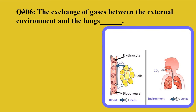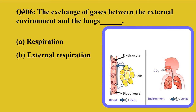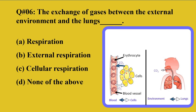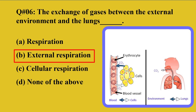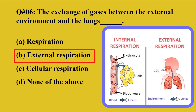Question number 6: The exchange of gases between the external environment and the lungs — this term is known as A: respiration, B: external respiration, C: cellular respiration, D: none of the above. The correct option is B, external respiration. When we take in oxygen, it reaches our lower respiratory tract into the alveoli, which are surrounded by blood capillaries. Oxygen goes into the blood and carbon dioxide is released into the lungs, then exhaled out into the environment. This type of respiration between the lungs and the environment is known as external respiration.